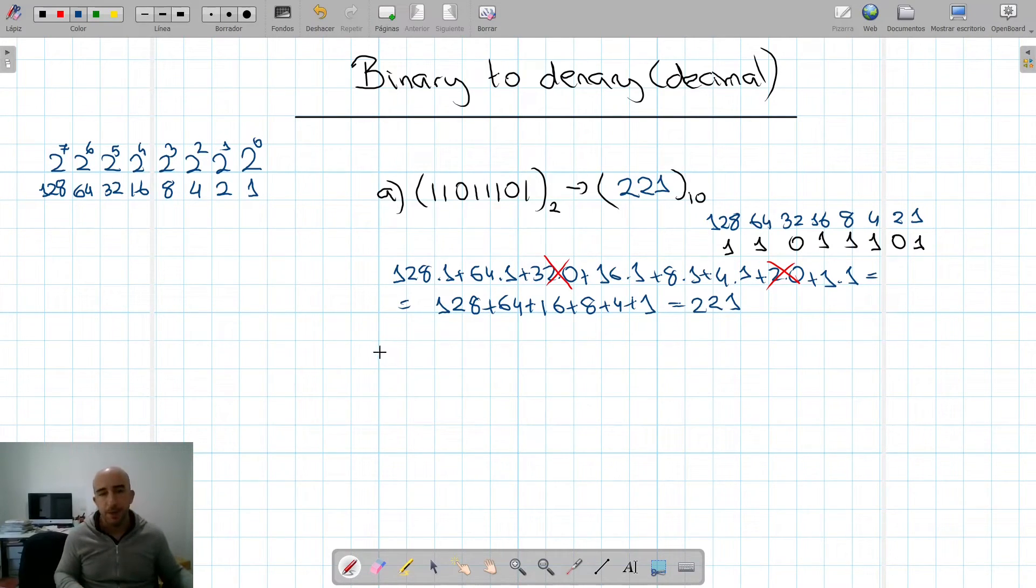So the value of this binary number in denary is 221. Really easy. Let's repeat this process for another number. So imagine we're given 1, 1, 1, 1, 0, 0 in binary, and we want to convert it to denary.